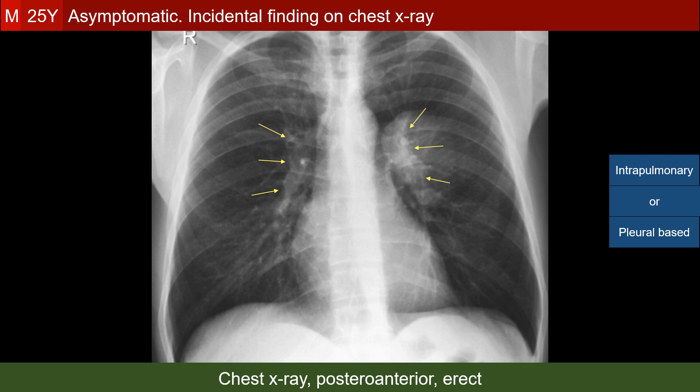The second important sign is the hilum overlay sign. Here we see the outline of the left hilum through the opacity of the lesion, which means that the lesion is not arising from the hilum or the adjacent parts of the lungs — of which we also see the pulmonary vessels — but is anterior or posterior to it, probably from the chest wall or a pleural-based lesion.